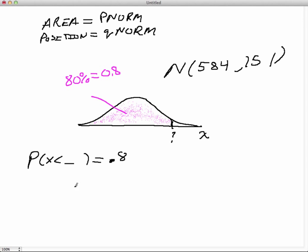So all we've got to do for Q norm, as it turns out, it's actually pretty straightforward. Q norm, we put in the area to the left. Remember, this is a left tailed program, just like our table. So we put in the 0.8. And then we put in our mean, which in this case is 584. And then we put in our standard deviation, which is 151.